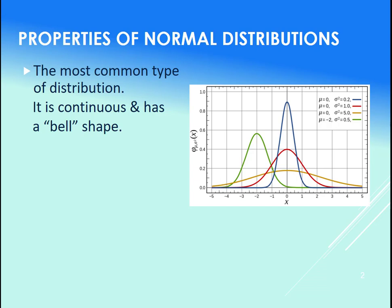So continuous is when you can have any values. You could have 2.31 or 2.49, so any value between any of the values is possible as well, if that makes any sense.